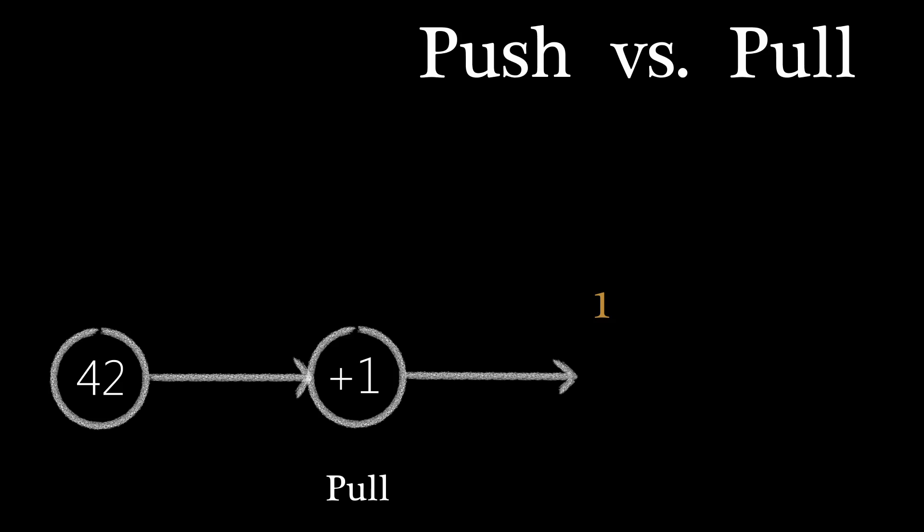In the pull model, the final output is first requested. This causes the increment node to request the data it needs from the constant node. Since the constant node doesn't need any inputs before it can be evaluated, it simply places the value of 42 on its output.